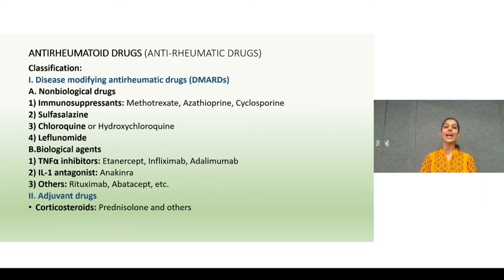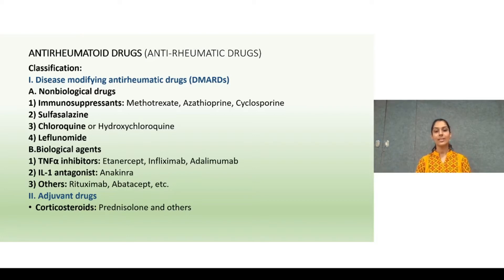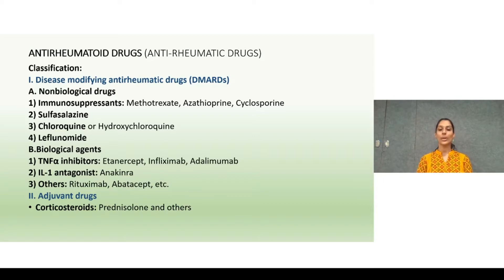Various anti-rheumatoid drugs: First, disease-modifying anti-rheumatoid drugs, that is DMARDs. Non-biological DMARDs include immunosuppressants such as methotrexate, azathioprine, cyclosporine, sulfasalazine, chloroquine or hydroxychloroquine, and leflunomide. Biological agents include TNF-alpha inhibitors: etanercept, infliximab, adalimumab; interleukin-1 antagonist: anakinra; and others such as rituximab and abatacept. Other adjuvant drugs used are corticosteroids like prednisolone.